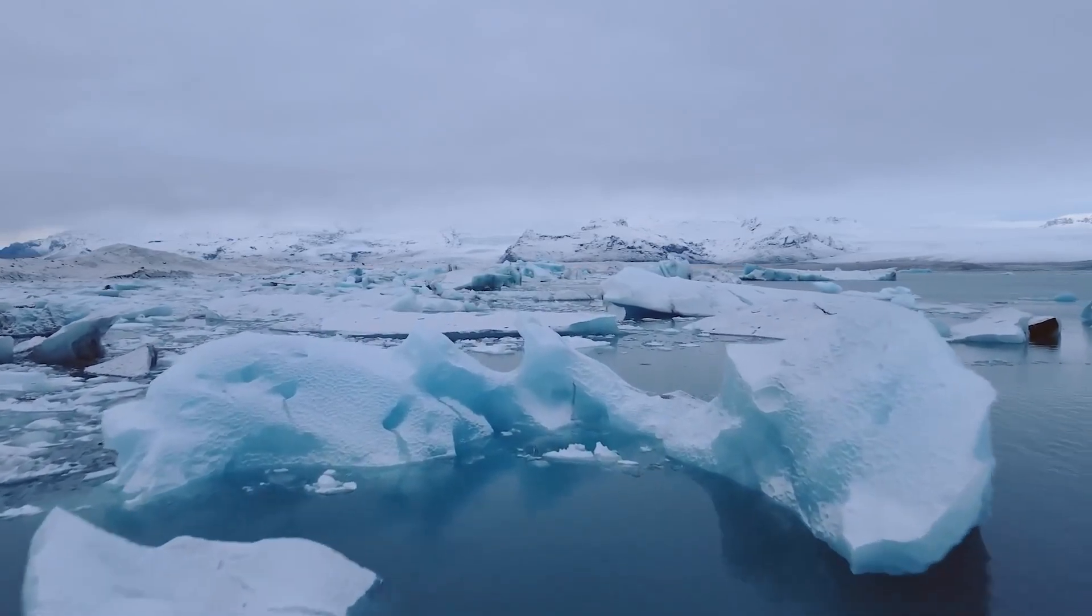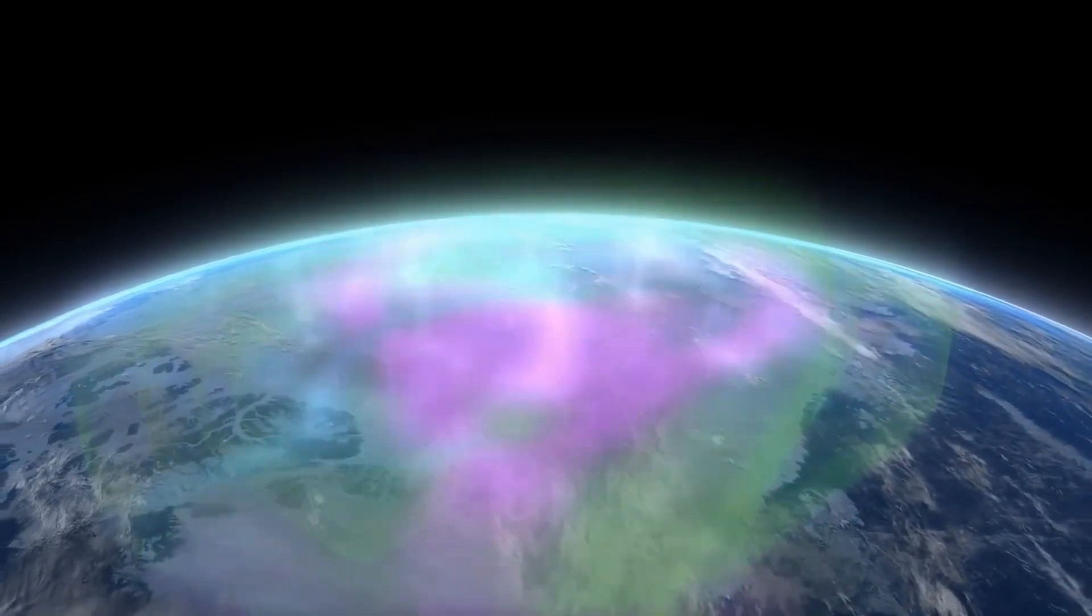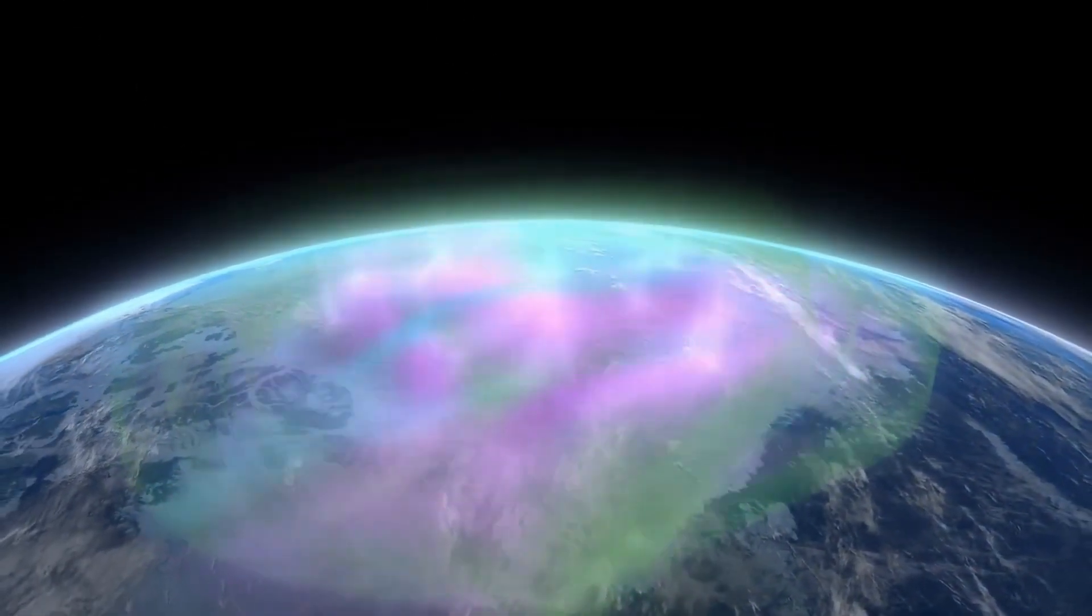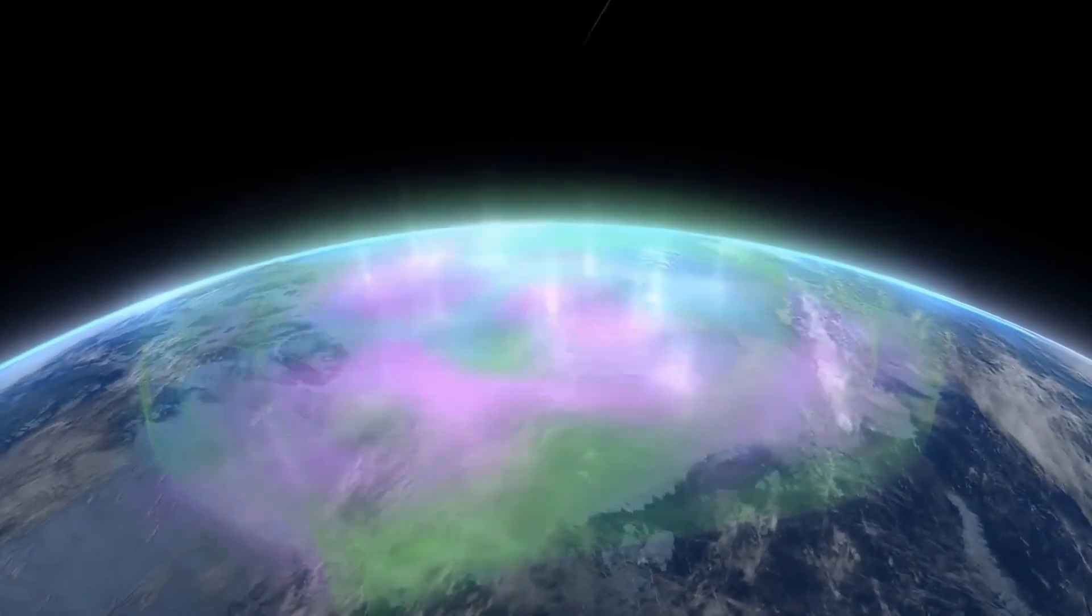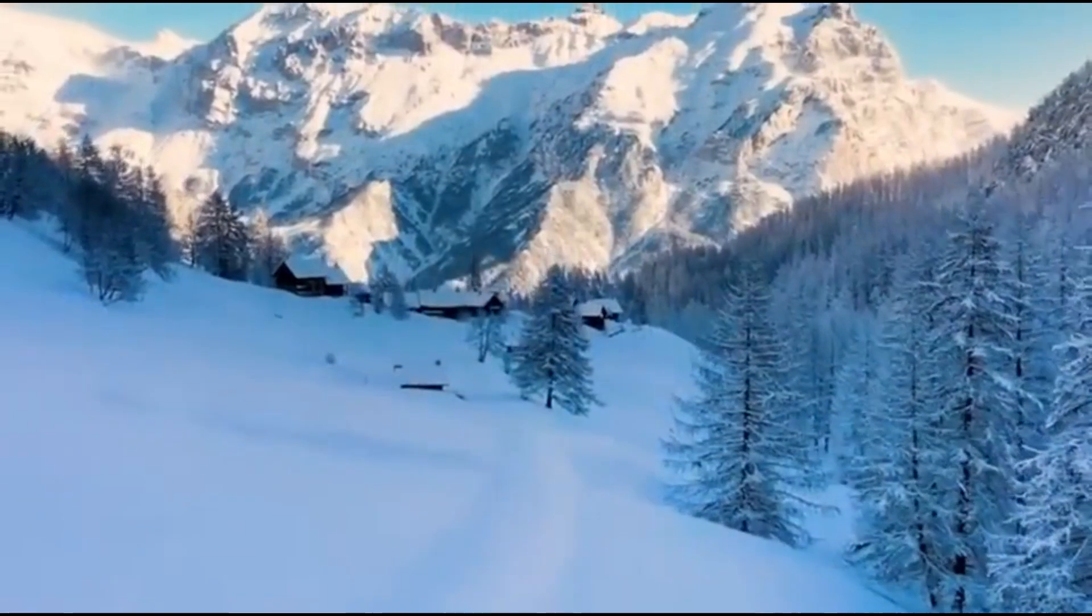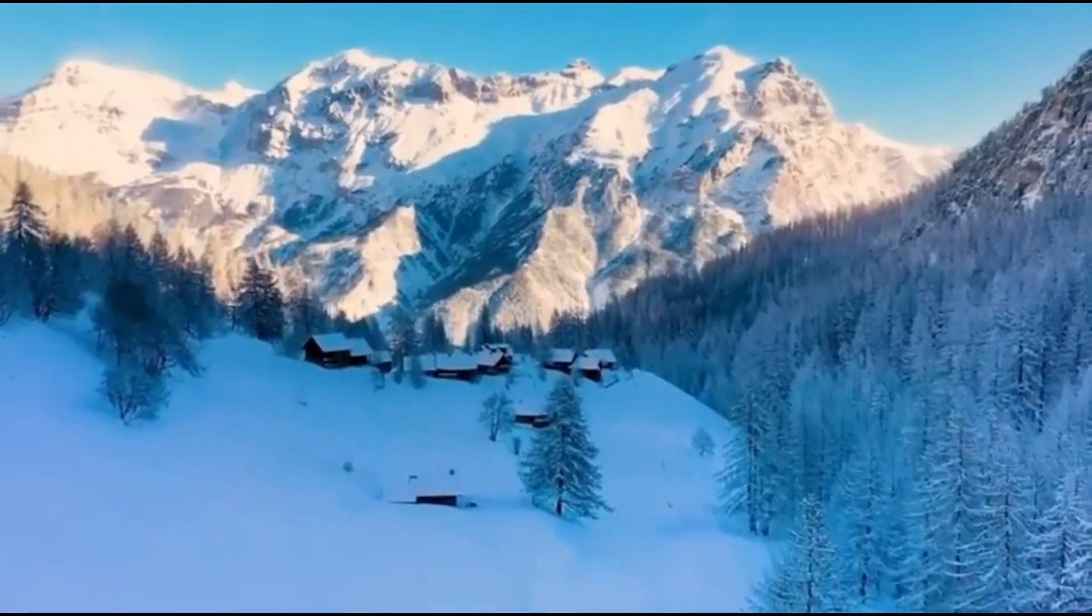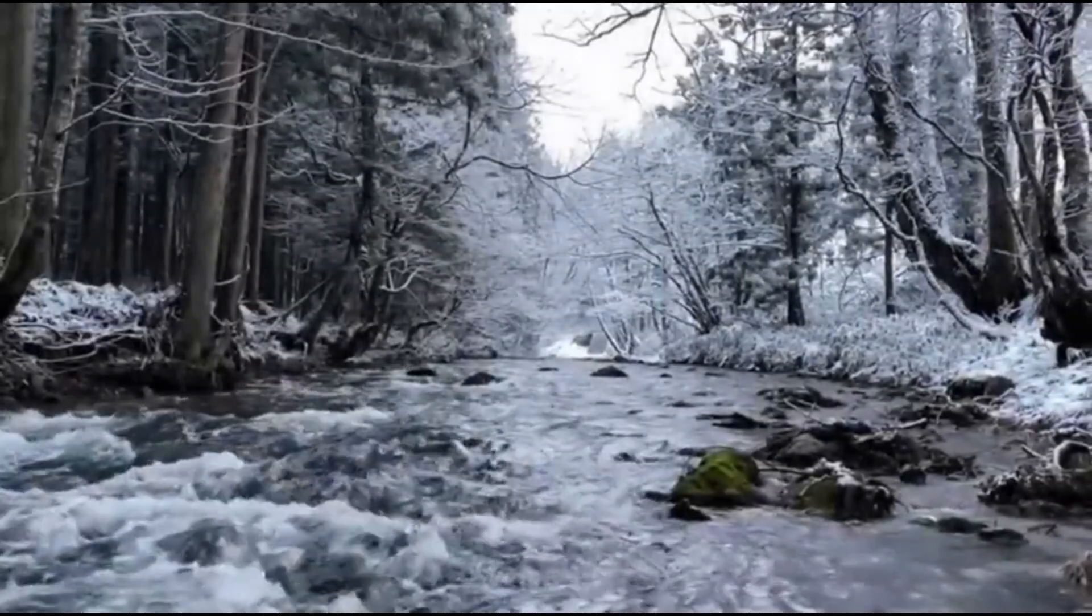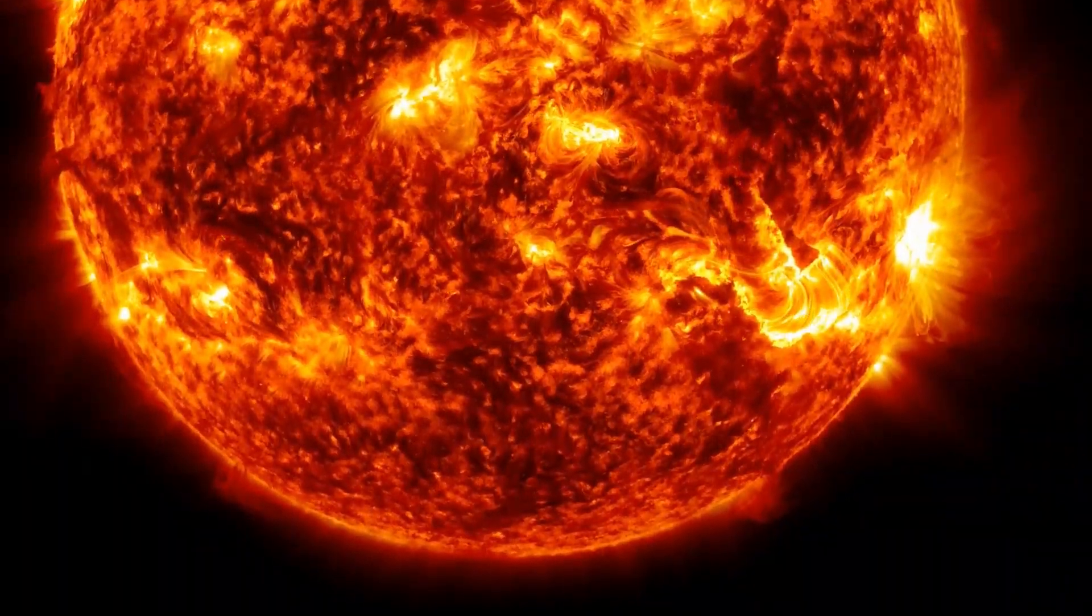In August 1972, a powerful solar storm struck Earth between the Apollo 16 and Apollo 17 missions to the moon. This solar event was so intense that had astronauts been in space at the time, they would have received lethal doses of radiation. It also set off unexplained mine explosions off the coast of Vietnam, as the intense magnetic activity triggered sensors in the mines.